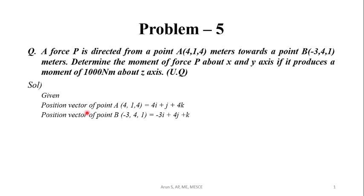Similarly, the position vector of point B (-3, 4, 1) is given by (-3-0)i + (4-0)j + (1-0)k, which gives us minus 3i + 4j + k.